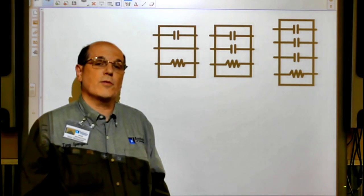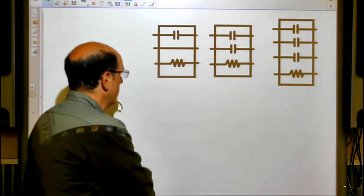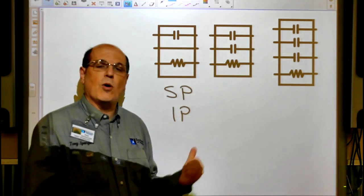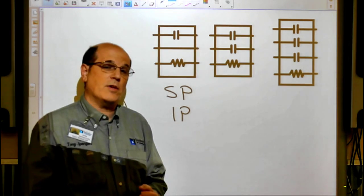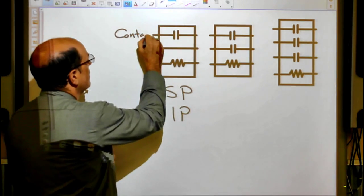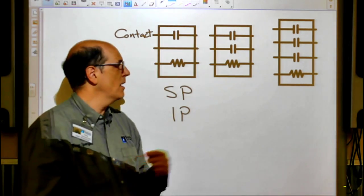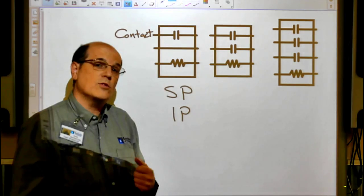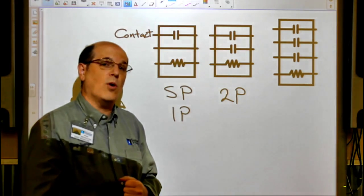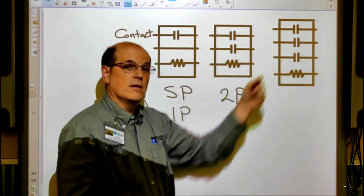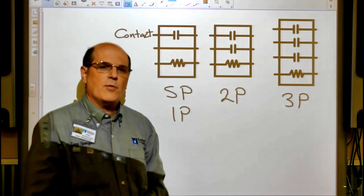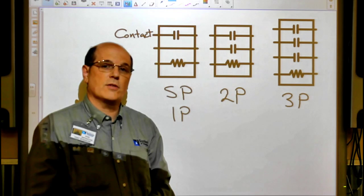Here we can see schematic symbols for three different types of contactors. This first one is a single pole or one pole contactor, because there's one contact inside of it. This next one has two contacts or two poles. This is a schematic symbol for a two pole contactor. This one is a three pole contactor. We find three pole contactors a lot in commercial and industrial applications.